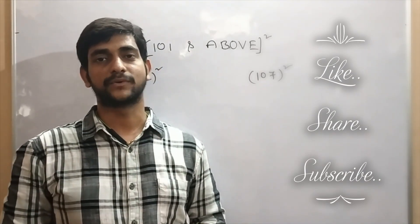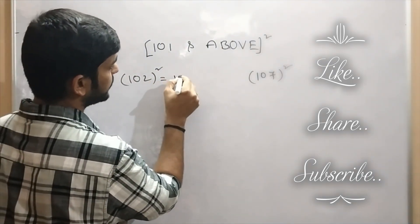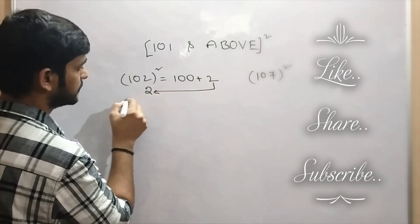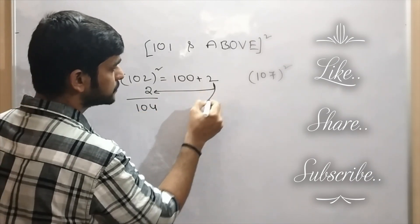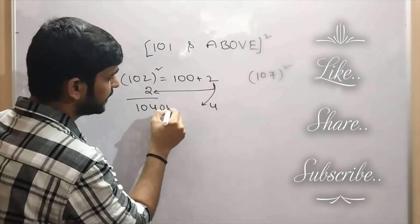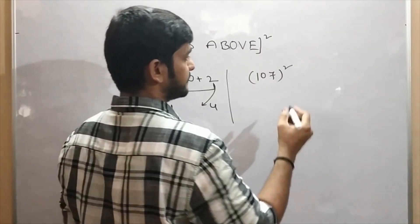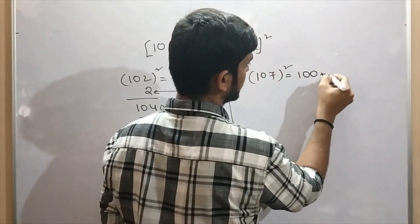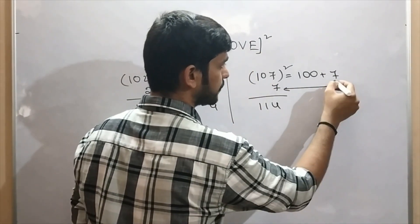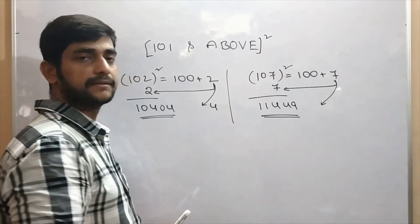Now we are going to find out the squares of 101 and above. Let's take 102. 102 we can write it as 100 plus 2. Take this 2 and add to 102 — here we are getting 104. And 2 squared will be 4. Since 102 squared is a 5-digit number, we write 04. So 10404 will be 102 squared. For 107 squared, 107 we can write it as 100 plus 7. Take this 7 and add it to 107 — here we are getting 114. And 7 squared will be 49. So 11449 will be 107 squared.